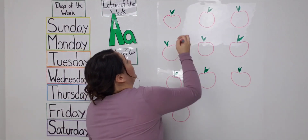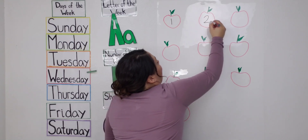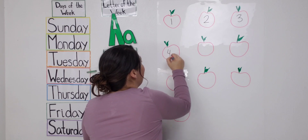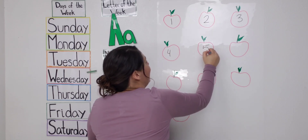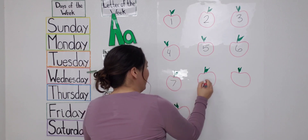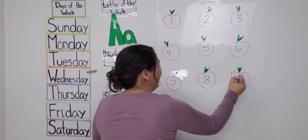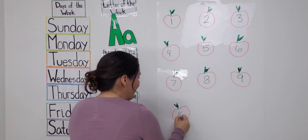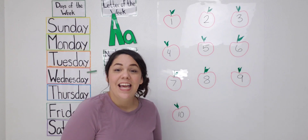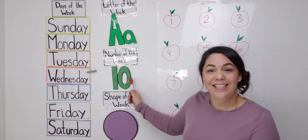Here we go. One apple. Two apples. Three apples. Four apples. Five apples. Six apples. Seven apples. Eight apples. Nine apples. And ten apples. Great counting friends — ten apples. And our number of the week is ten.